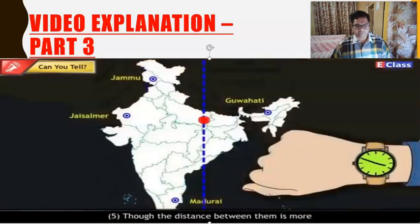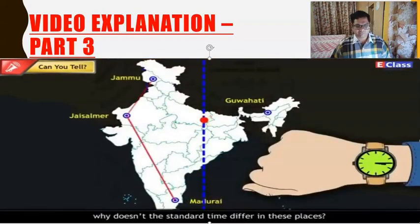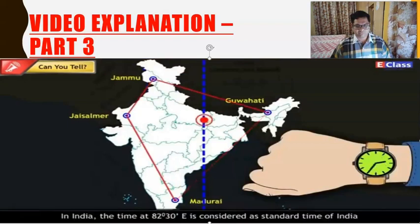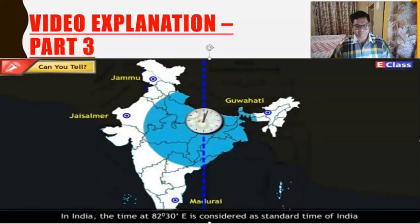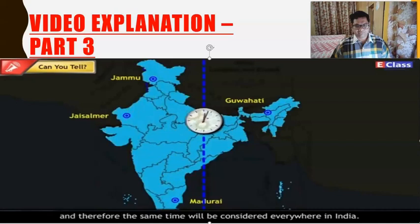Though the distance between these places is more, why doesn't the standard time differ? Answer: In India, the time at 82° 30' E is considered as the standard time of India, and therefore the same time is considered everywhere in India.